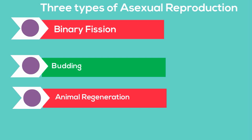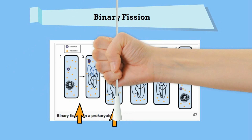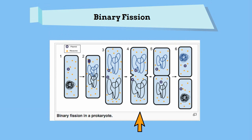Binary fission occurs in bacteria and allows them to make copies of themselves. In step 1, the genetic material begins to make a copy of itself. By step 3, the genetic material is copied. Then by step 4, the cell begins to elongate, and it will continue until step 6, where two new identical cells are created. In this video, a bacteria makes a copy of itself by binary fission.